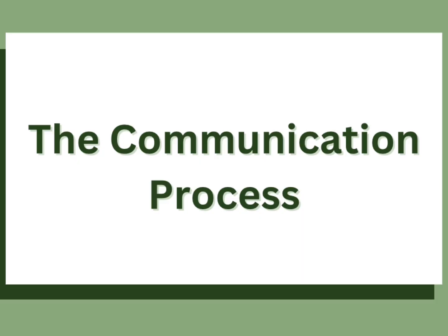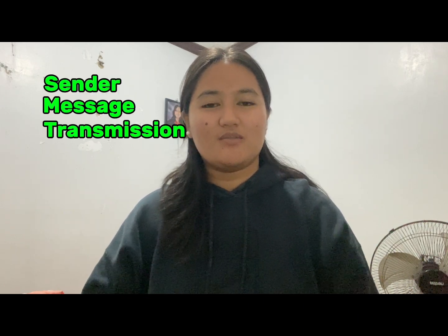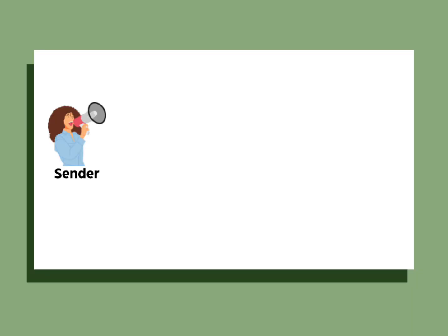Let's now move on to the communication process. It consists of the sender, message, transmission, recipient, receiver, and feedback. The sender is the individual or group that starts the communication and makes the attempt to convey a message. It is the individual who imparts their ideas, wisdom, information, and experiences. The message pertains to the data that is being communicated from the sender to the receiver.